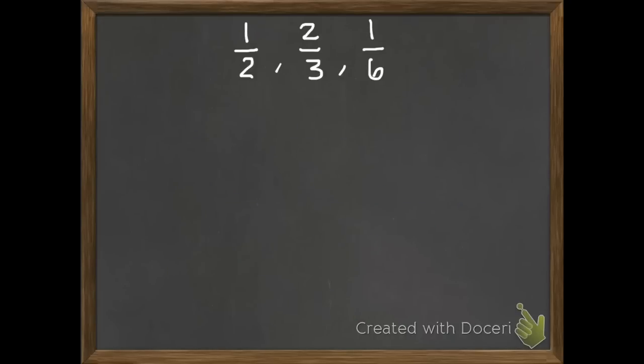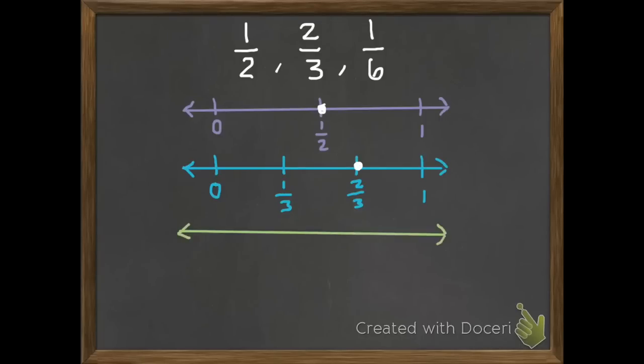We're also going to still be putting three fractions in order from least to greatest as well. We can put these on a number line, and we have one-half. That's obviously right in the middle. If we put two-thirds on a number line, two-thirds is a little more than one-half. And one-sixth is less than one-half.